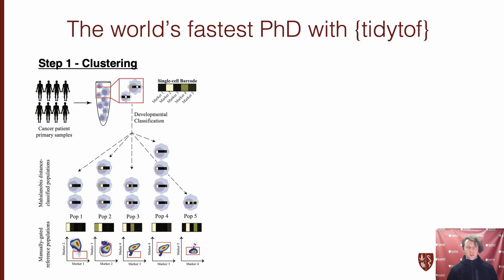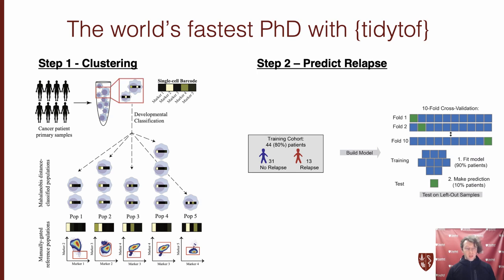First, they estimated the stage of hematopoietic development at which leukemic cells developed their relapse-associated phenotype by comparing cancer cells to well-studied clusters of healthy bone marrow cells. And they did this using a distance-based classifier that operated at the single cell level. After that, they then used the characteristics of the cancer cell clusters they were able to derive to build a predictive model of which kids would relapse and which wouldn't.